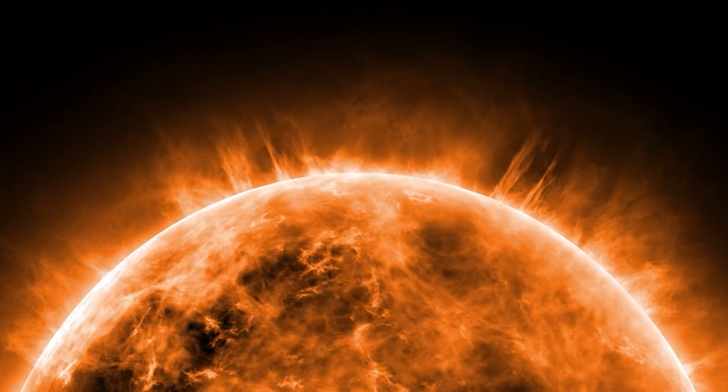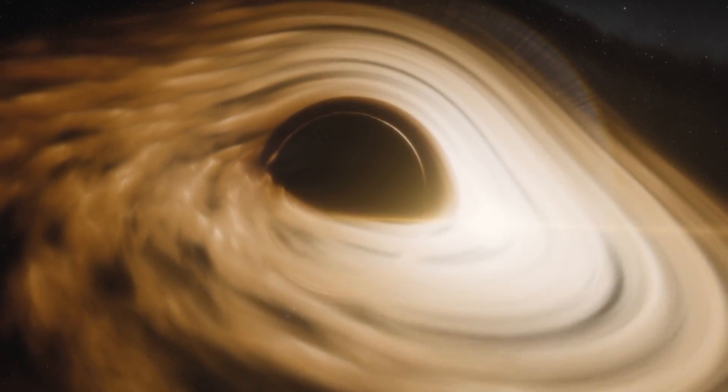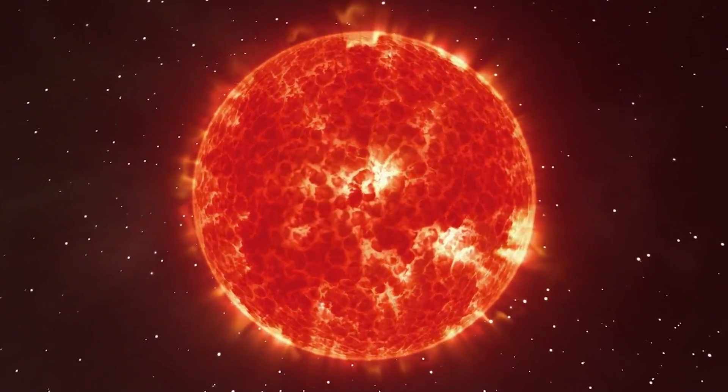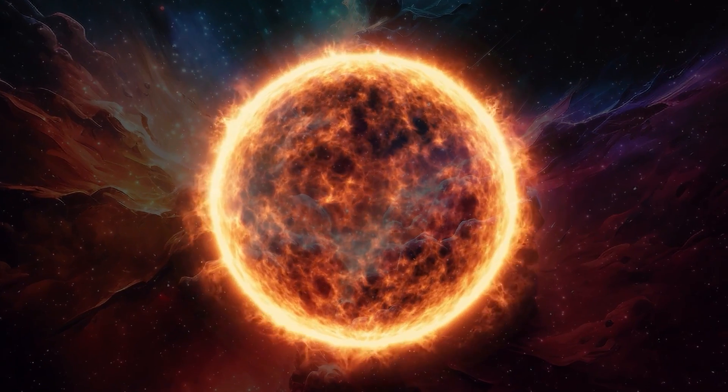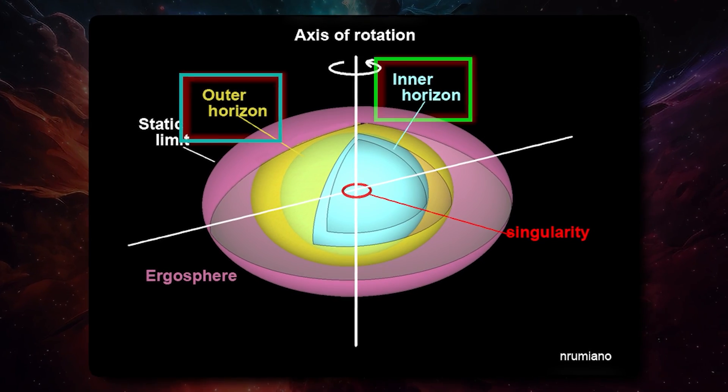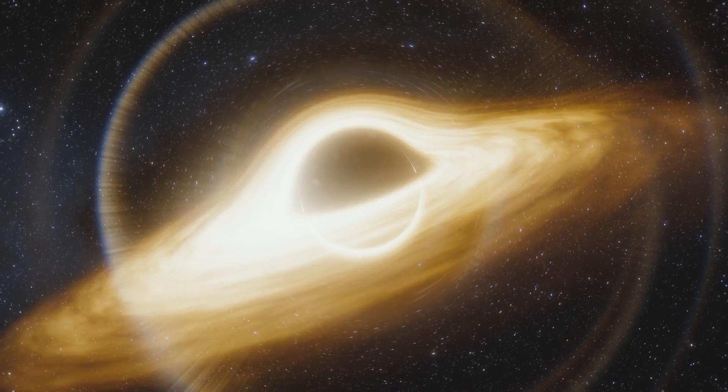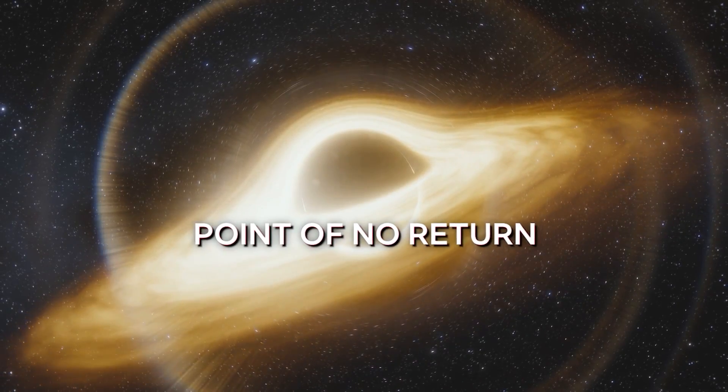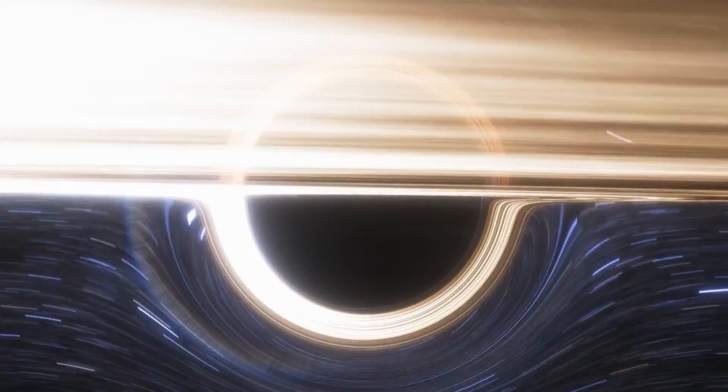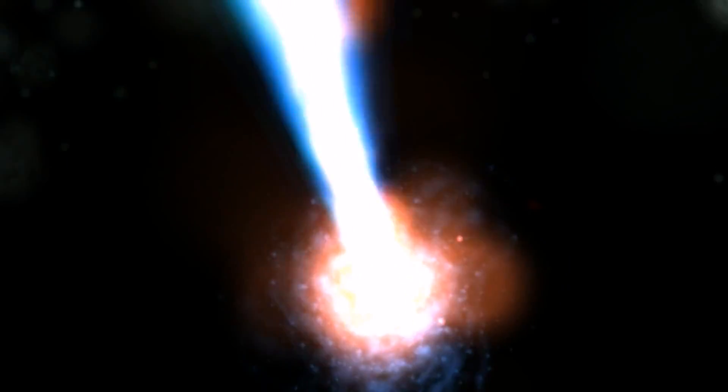No need to worry about our Sun turning into a black hole, though. It lacks the necessary mass and will instead become a red giant and then a harmless white dwarf. Black holes have three main parts: the outer and inner event horizons, and the singularity. The event horizon acts as the point of no return, and anything crossing it, even light, is consumed. The singularity is where the mass concentrates, creating immense density.